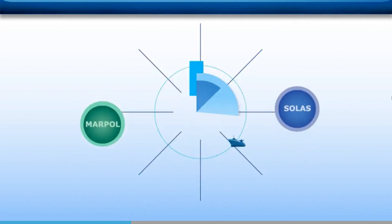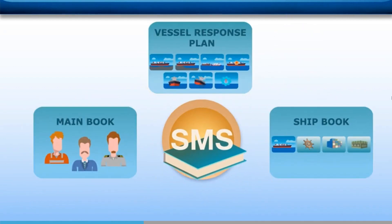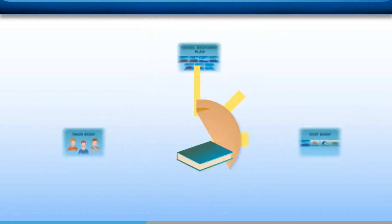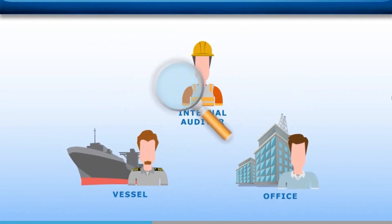After successful completion of this module, you will understand why the ISM code is needed, identify its main objectives, and recognise that it seeks to improve management systems in order to reduce accidents caused by human error. And identify the reporting requirements within a safety management system. You will also recognise the types of work that require a permit, as well as the reports, audits, and reviews that are required to ensure ship safety and pollution avoidance.